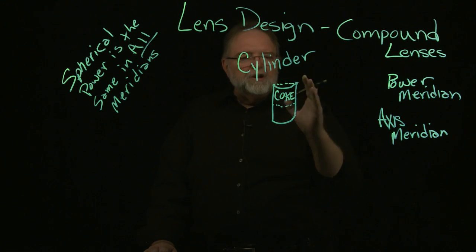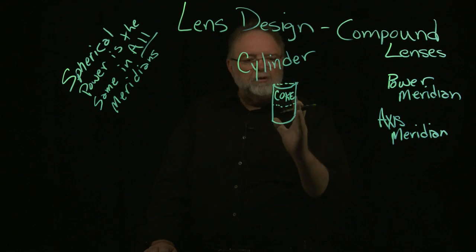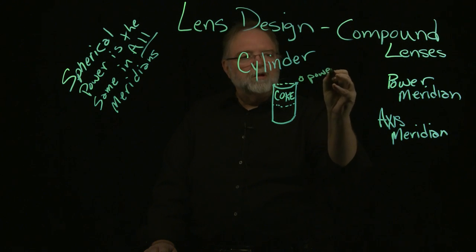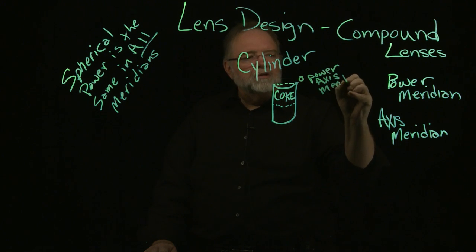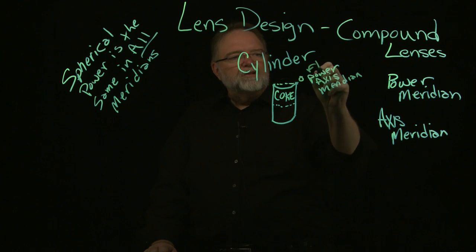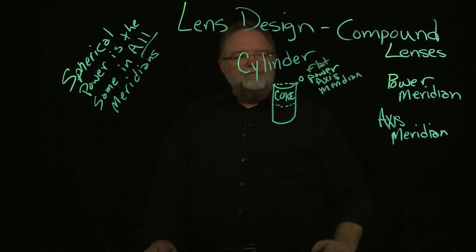In this meridian, the up and down side of a Coke can, there's zero power. This would be the axis meridian. So it's flat.